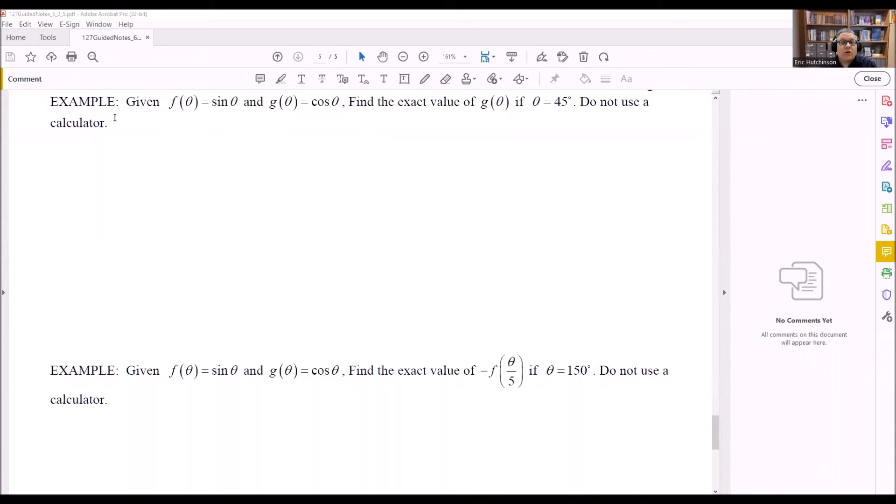For this first question, we're given that f(θ) = sin(θ) and g(θ) = cos(θ). It says find the exact value of g(θ) if θ = 45°. Do not use a calculator. So what they mean by that is instead of putting it in your calculator, they want you to use a unit circle for this one.